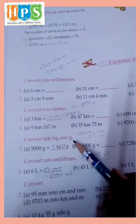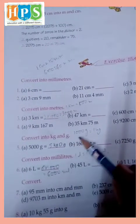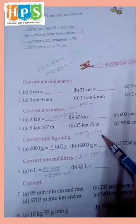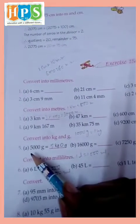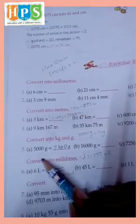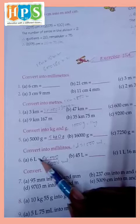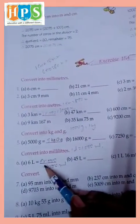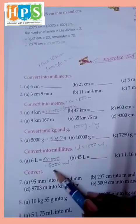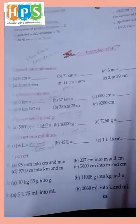Convert into kg and g: 5000 g. 1000 gram is equal to 1 kg, so we divide 5000 divide 1000, 5 kg 0 g. Convert into milliliters: 1 liter is equal to 1000 milliliters. 6 multiplied 1000 is equal to 6000 milliliters. Then convert.